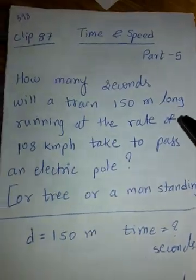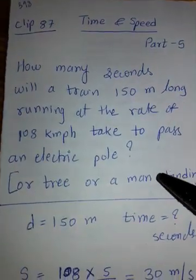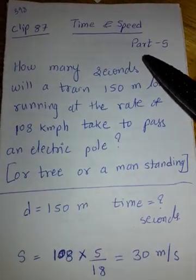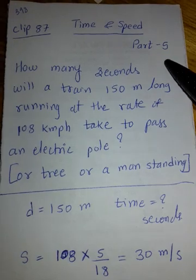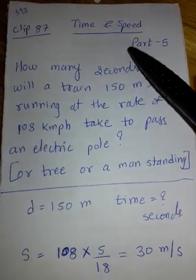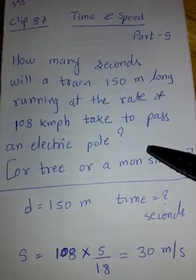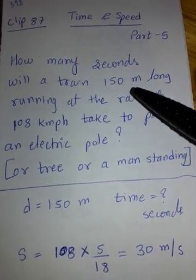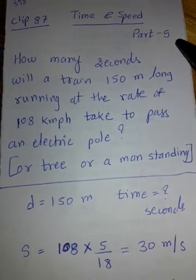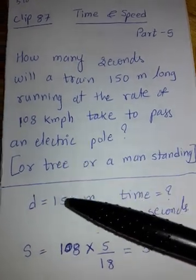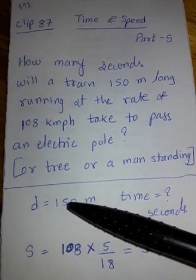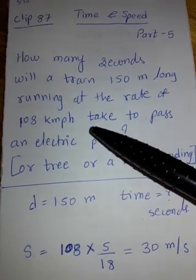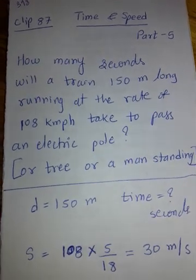Hello dear students, welcome once again to our channel Maths in Minutes with Priya. Today it's clip 87, Time and Speed, Part 5. In the first 4 parts of Time and Speed, we have learned the basic concept, convergence, and also a few shortcut tricks. I have begun with train problems in Part 4, and now in Part 5 we are going to solve some more train problems. There is a variety of problems in trains, and in every part I am covering a different variety. So today let's see what variety we are going to cover.